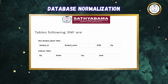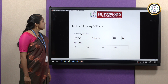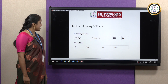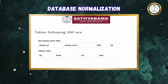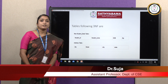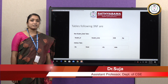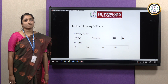We have split the table into two tables. The first contains student ID, student name, date of birth, and ZIP code. The second table contains ZIP, street, city, and state. These tables are now in third normal form. These are the normal forms we have learned today. There are some other normal forms also, which will be covered in the next lecture. Thank you.